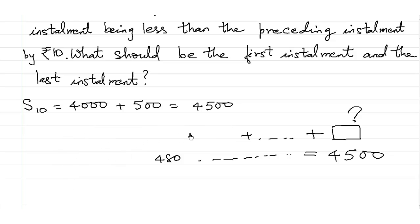So we need to find A, which is the first installment, and we also need to find the last installment T10, the last number. So the first thing that is given is S10 is equal to 4,000 plus 500, which is 4,500. So of course the value of N is 10.